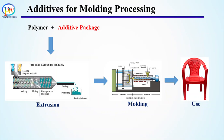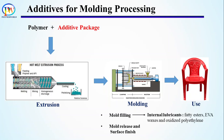Now let's talk about additives used to protect polymer and facilitate the molding process. In injection molding, molten polymer is pushed inside a mold cavity shaped like the final product, and when the polymer melt cools, the product is released. The two main requirements during molding are mold filling and easy release. To facilitate mold filling, an internal lubricant is added, which reduces friction between the polymer chains and facilitates flow inside the mold cavity. Common internal lubricants are fatty esters, EVA, waxes, and oxidized polyethylene.